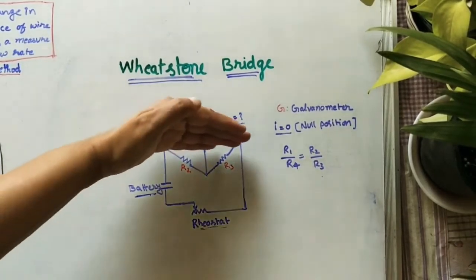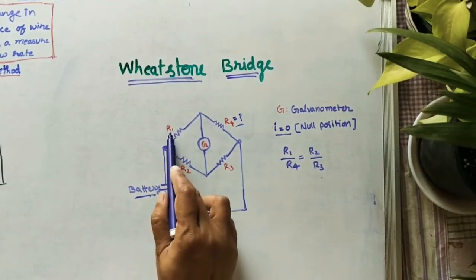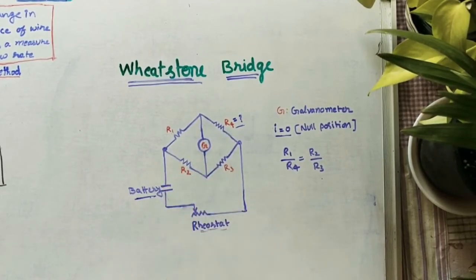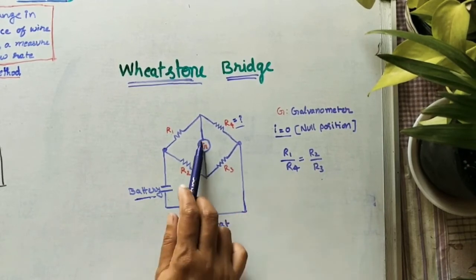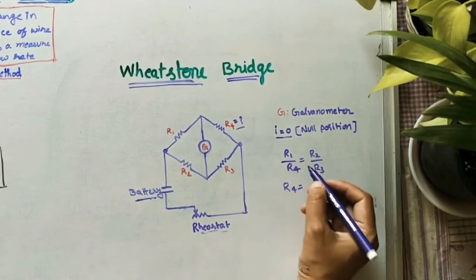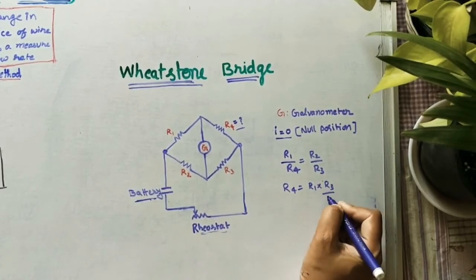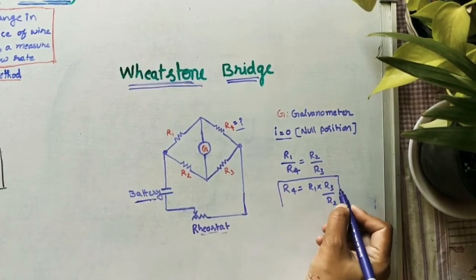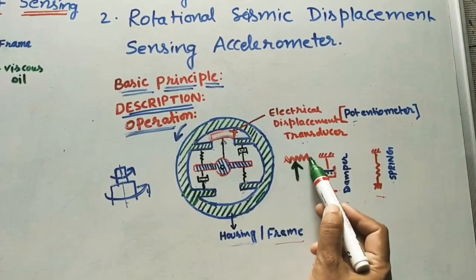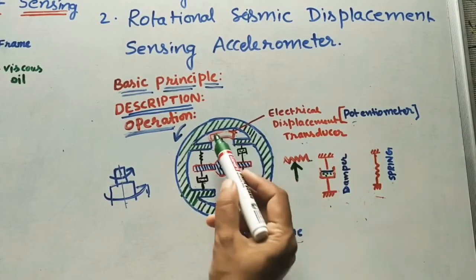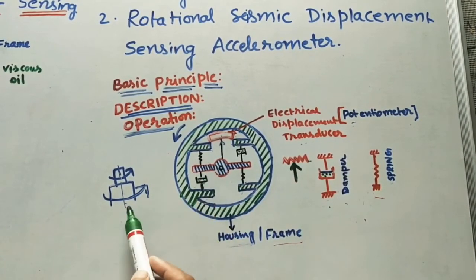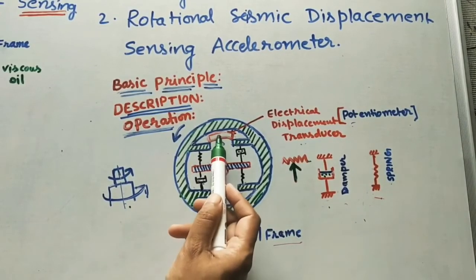In the balanced condition, the ratio of resistance on one side equals the ratio on the other side: R1/R4 = R2/R3. This condition is possible when the galvanometer reading is zero. Using this formula, we can find R4: R4 = (R1 × R3) / R2. This is the main use of the Wheatstone bridge — finding resistance. When the arrow moves on the resistance wire, the resistance changes, and that change in resistance measured by the Wheatstone bridge gives the displacement of the mass, which represents the vibrations of the machine.